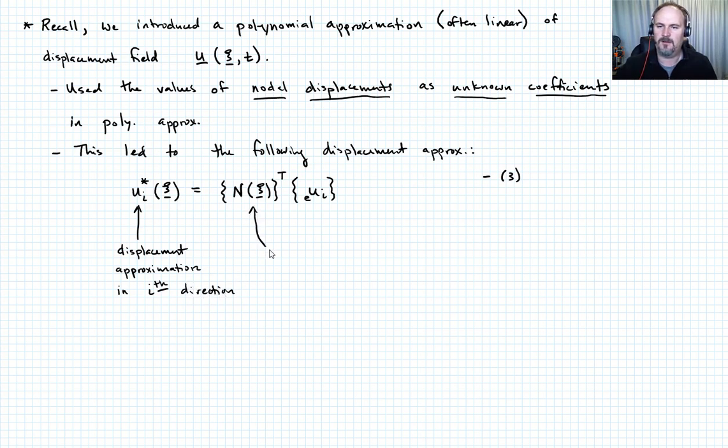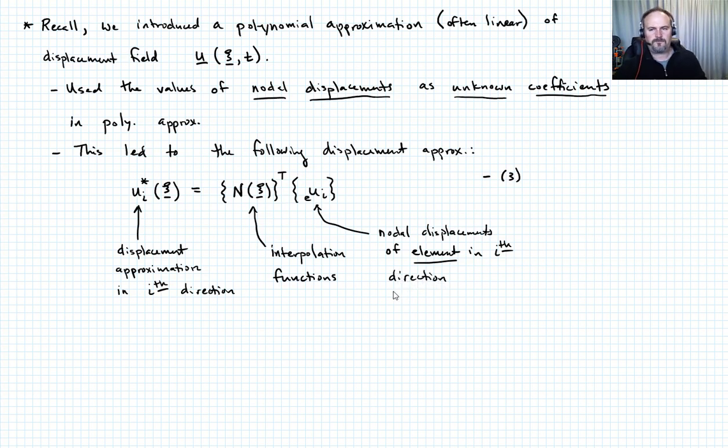N is our interpolation functions. Hopefully you remember that. And U sub I with subscript E is the nodal displacements of the element in the ith direction. Hopefully this is not unfamiliar to you.